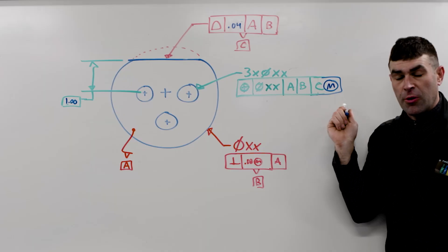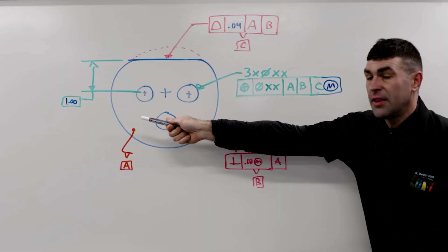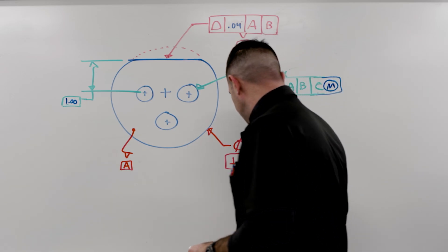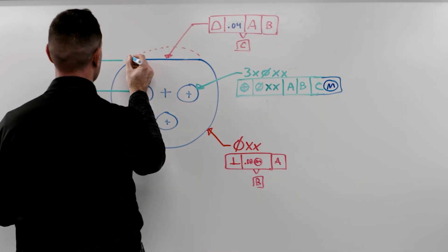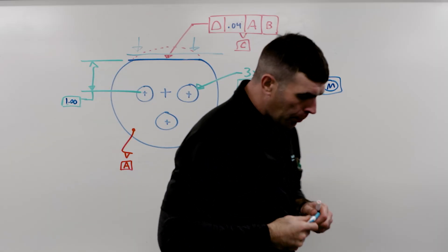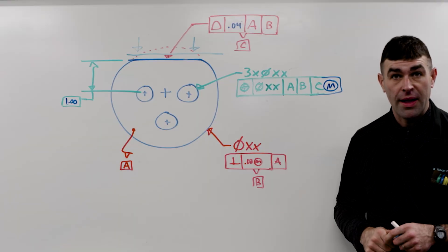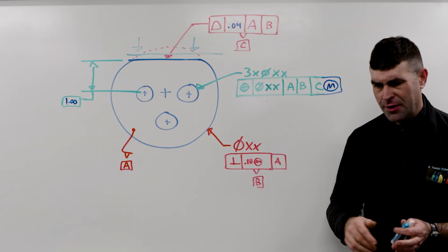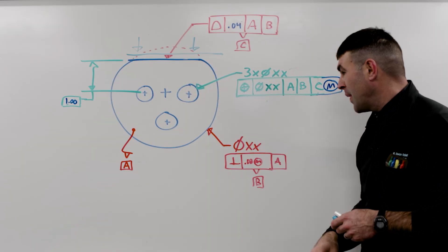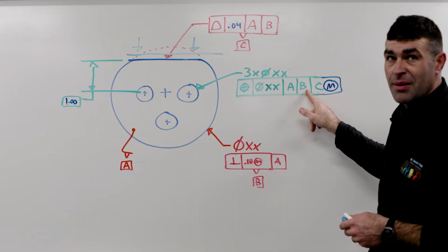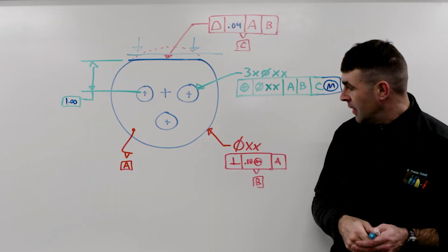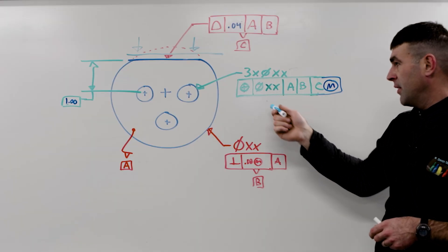Let's put some numbers on here. C at maximum material boundary. What does that mean? Well, we take the basic dimension plus half of this, and that's where we would set the true geometric counterpart for that particular feature. So the idea, and this would be a little weird because you're going to have a collapsing cylinder and this is fixed. It'd probably make more sense if B was at maximum material condition as well.